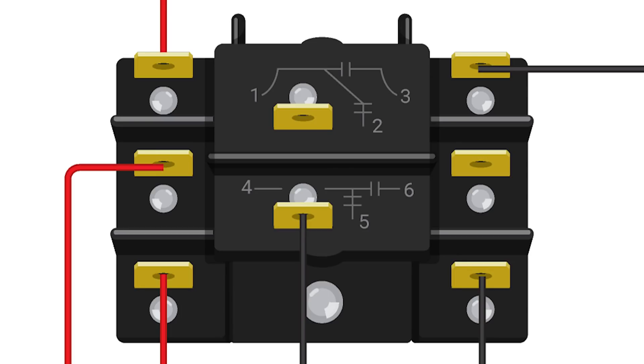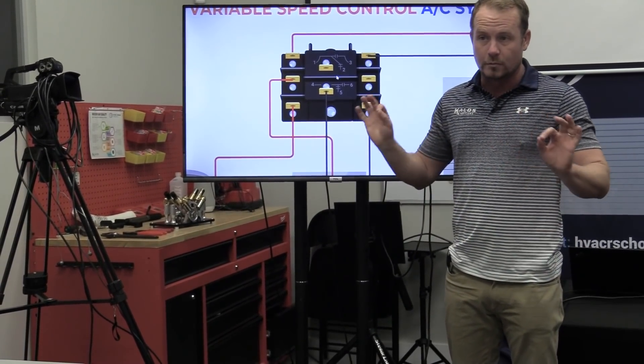In this relay, you have two sets of contacts, and they have both normally open and normally closed positions, which means that when the electromagnet is not energized, you don't have 24 volts applied across it, then this set of contacts from four to five is normally closed. So if I took an ohmmeter and put it right here, it'd beep without being energized. It's normally closed.